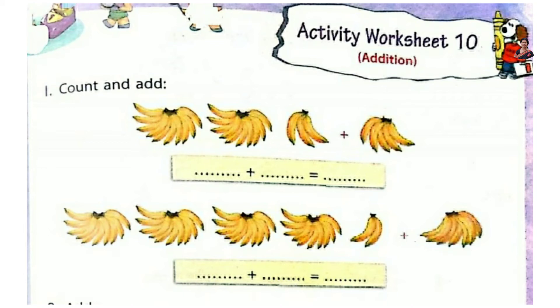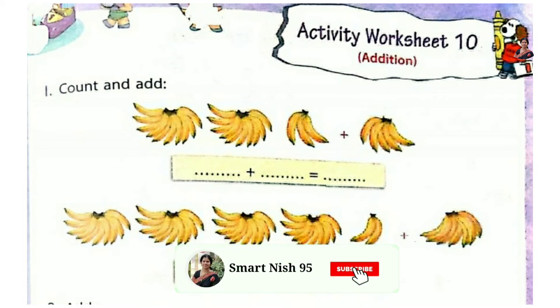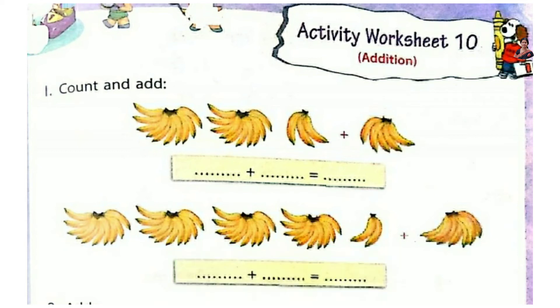Next we are doing Activity Worksheet 10. First: count and add. Here you can see bananas — 10's and 1's. In a bunch it is 10's and other ones. How many bunches? 2 bunches, so 20. And 1, 2, 3 — that is 20 plus 3 equals 23. Then plus 1, 2, 3, 4, 5 — 5 bananas. That is 23 plus 5. 23 plus 5 is 20 plus 3 plus 5, that is 28. So 28 bananas.